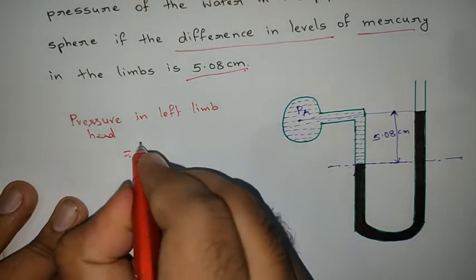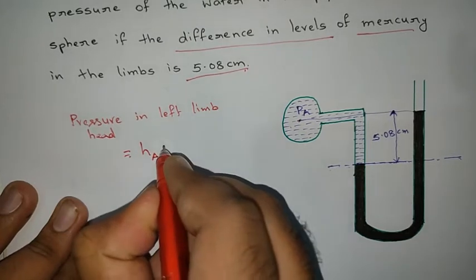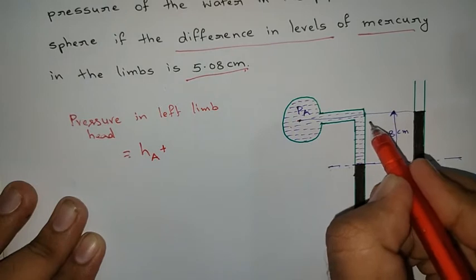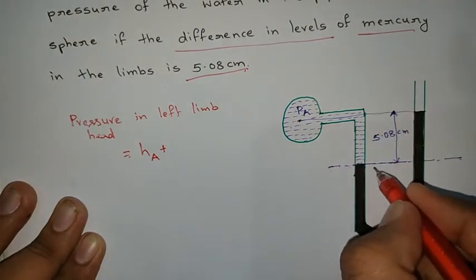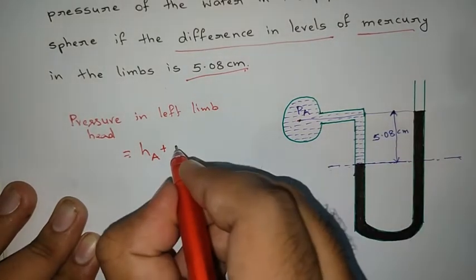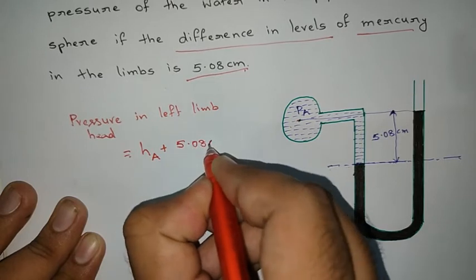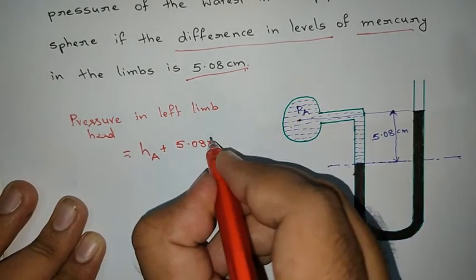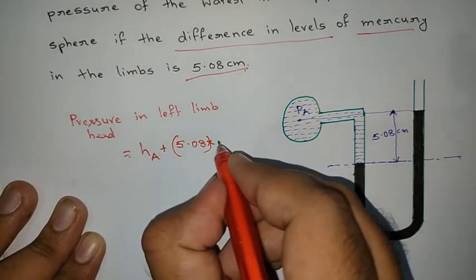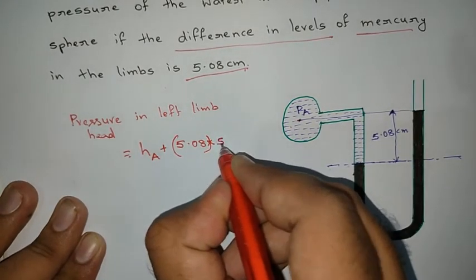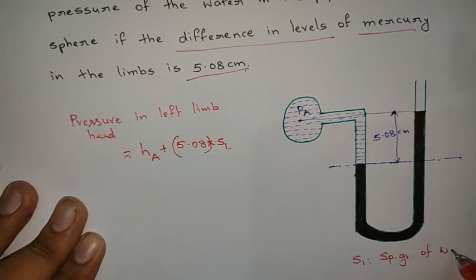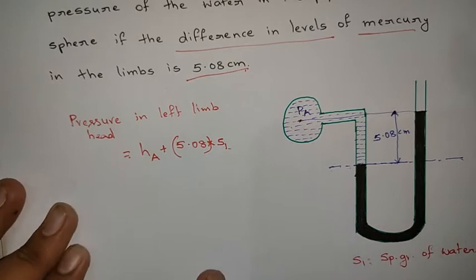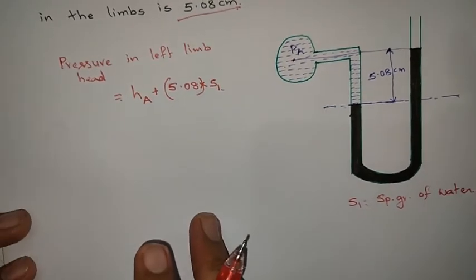The pressure head in the left limb equals H_A plus 5.08 into S1, where S1 is the specific gravity of water. From point A down to the datum, the column contains water of height 5.08 centimeters. That gives us the pressure head in the left limb.